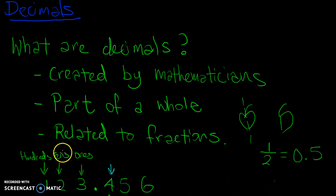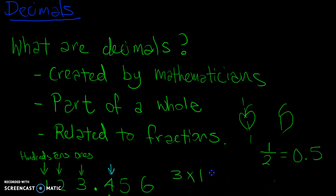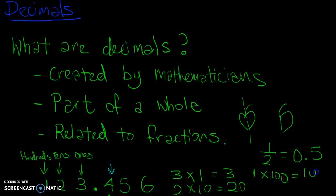To be able to better understand decimals, you have to know your place values very well. Assuming you have a number and you're looking at three digits: the digit in the 1's place represents that digit multiplied by 1, giving a value of 3. When a digit is in the 10's place, it's multiplied by 10, giving a value of 20. And when it's in the 100's place, it's multiplied by 100, giving a value of 100. Whatever digit is in whichever place gives you a certain value.